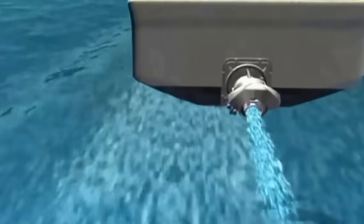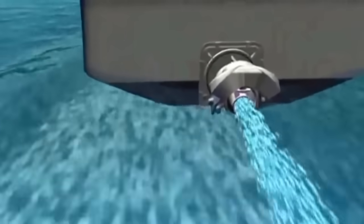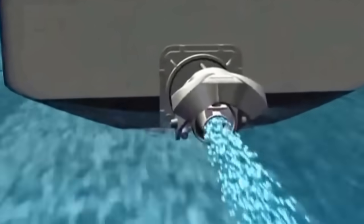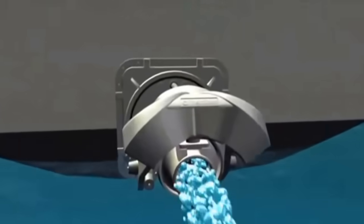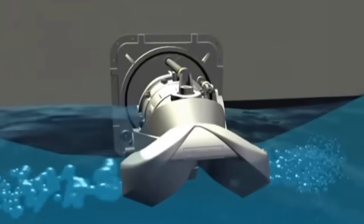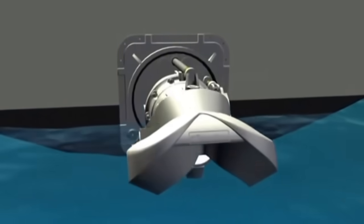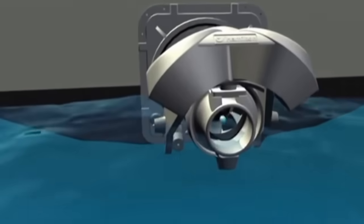In a high speed emergency, the operator is able to lower the astern deflector into the jet stream without reducing engine throttle to effect a crash stop maneuver. This will bring the vessel to a stationary position within a very short distance.